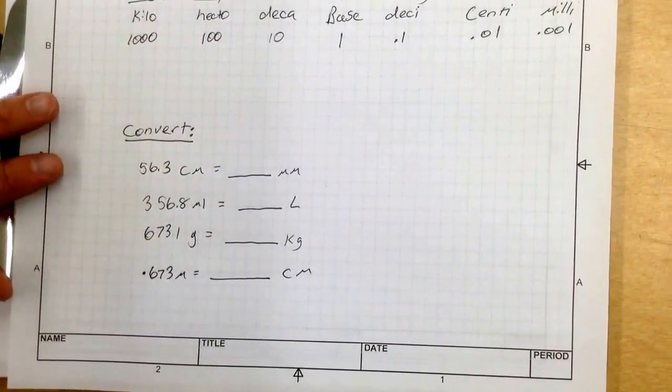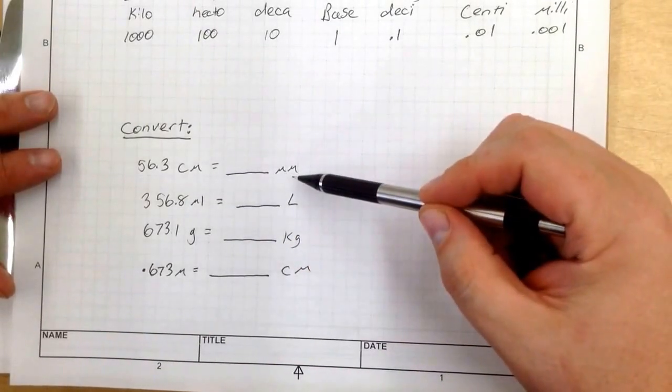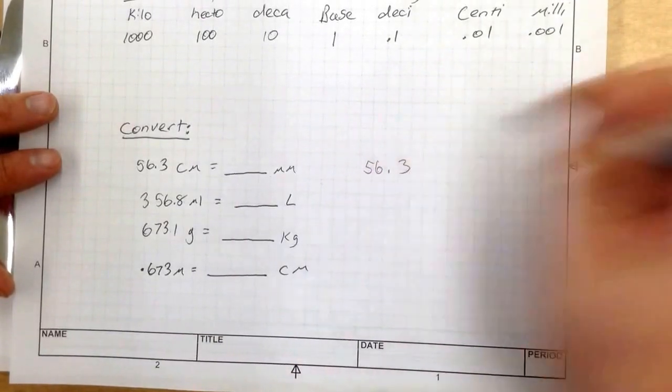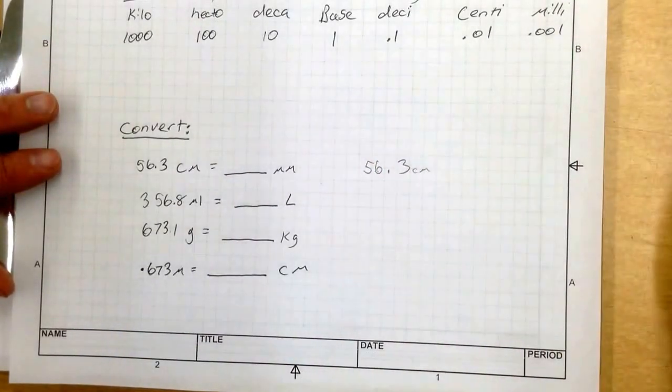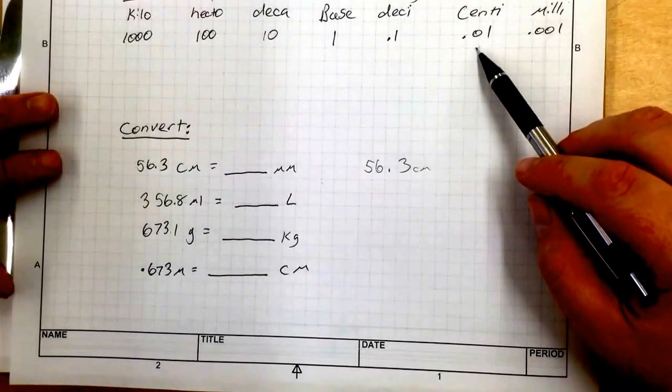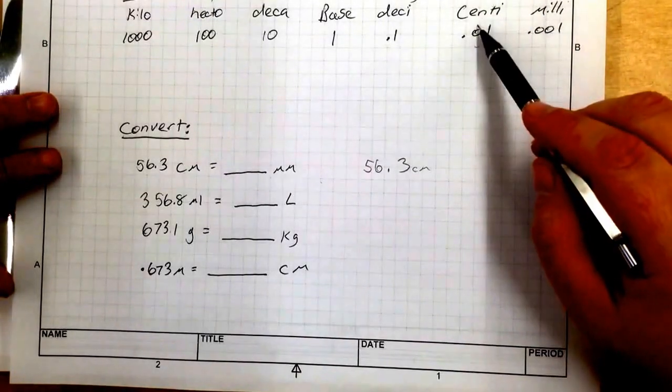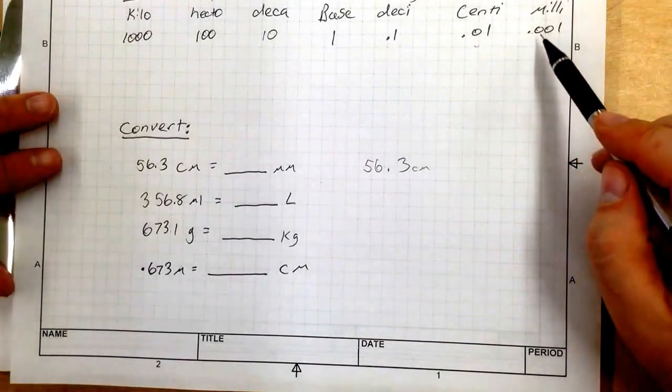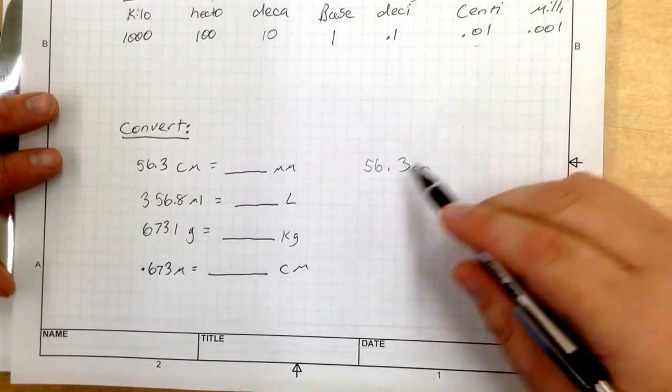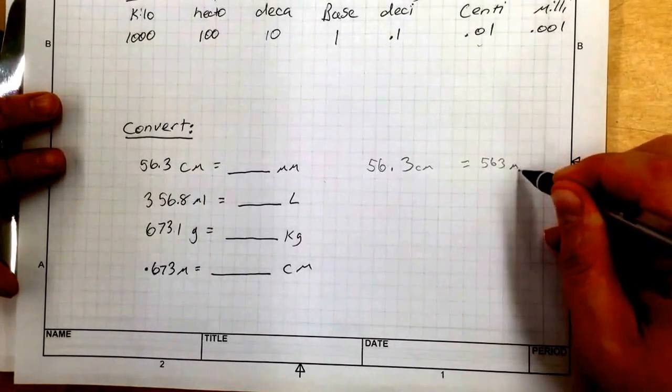Okay, let's work with a few conversions right here. So we've got 56.3 centimeters. And how many millimeters does that equal? So let me draw 56.3 right there. And it is centimeters. So there is my centimeter unit right there. And I need to convert it to millimeters. So what I'm going to do, here is my centi. It is one unit to the right. So my decimal point moves one unit over to the right. So 56.3 centimeters is equal to 563 millimeters.